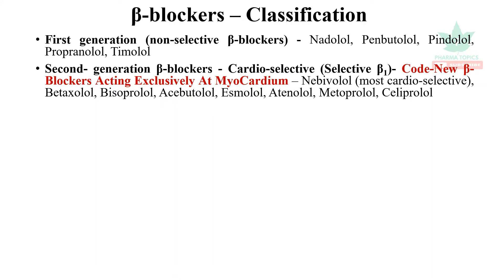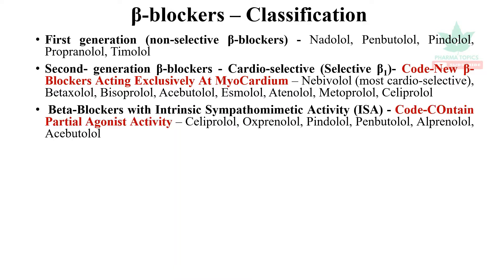Second generation beta blockers work exclusively at the beta-1 receptors present in the heart. Remember the code: new beta blockers acting exclusively at the myocardium — nebivolol, betaxolol, bisoprolol, acebutolol, esmolol, atenolol, metoprolol, and celiprolol. Nebivolol amongst these drugs is most cardioselective.